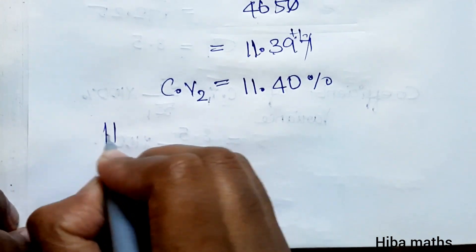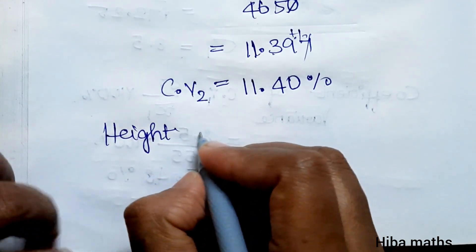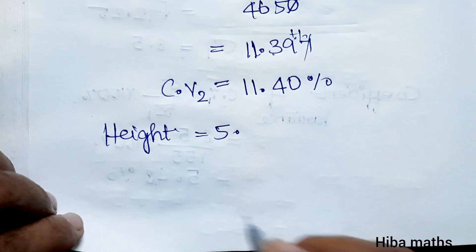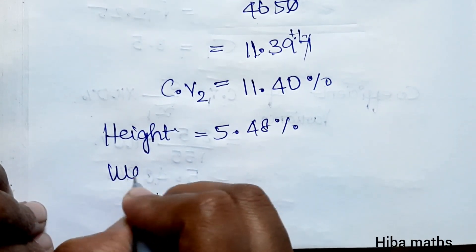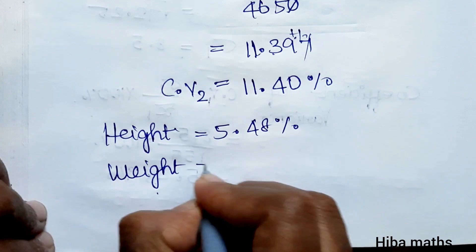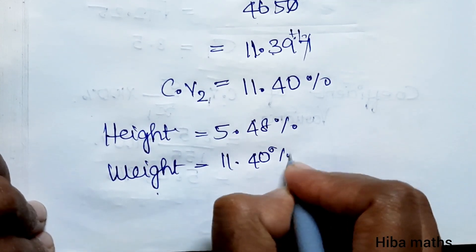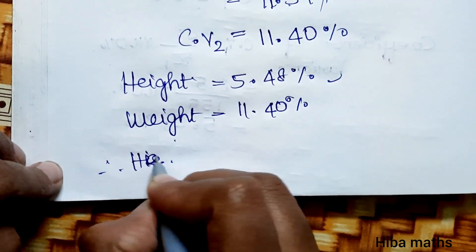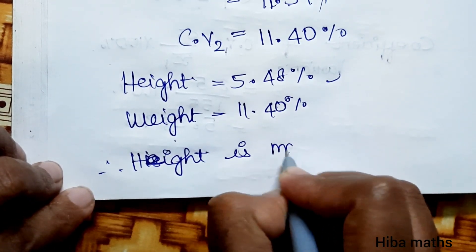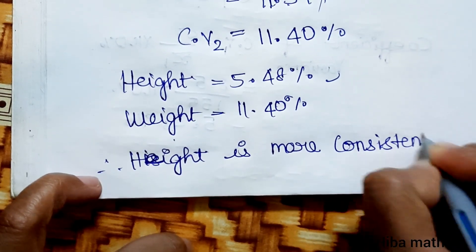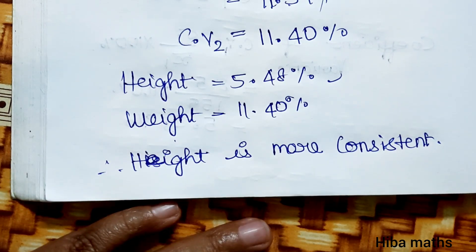Now comparing: height CV is 5.48% and weight CV is 11.40%. Since height has the lowest coefficient of variance, therefore height is more consistent. Thank you so much for watching.